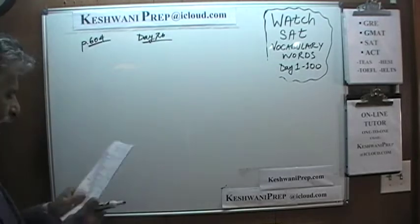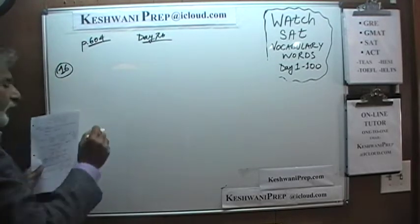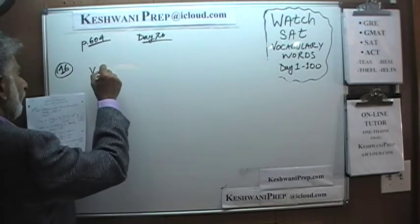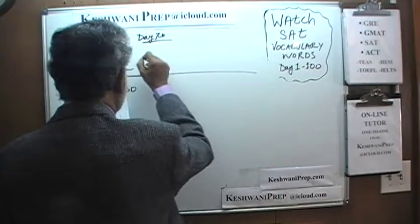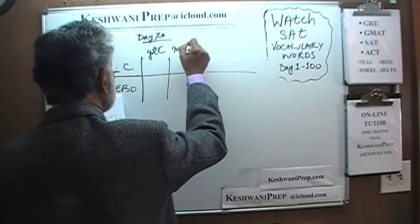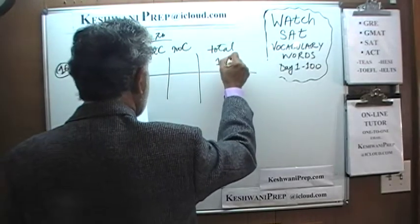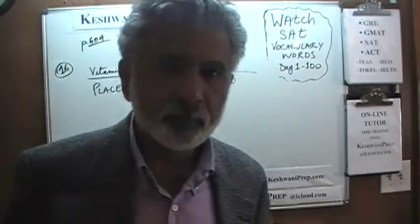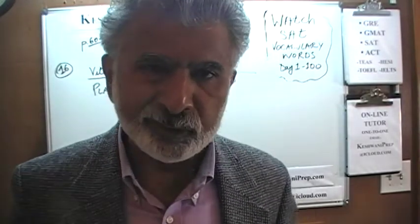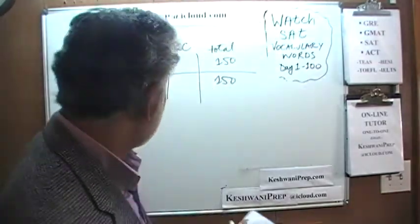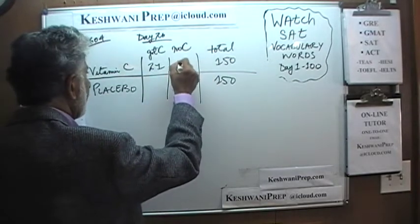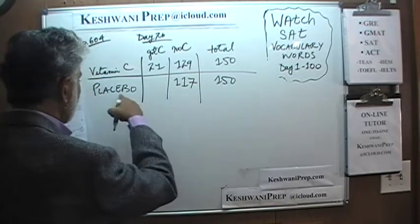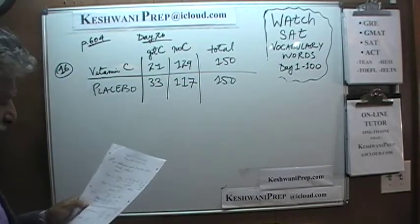Number 16. We have a group of 300 people who are part of an experiment. Whenever scientists perform an experiment, they break groups into two halves — one is called the control group, which is not given the treatment. One half gets the treatment, the other half gets what is known as the placebo. The figures: 21 people who got vitamin C got a cold out of 150; 129 did not. 117 people who got a placebo did not get a cold, and 33 people who got a placebo did get a cold.